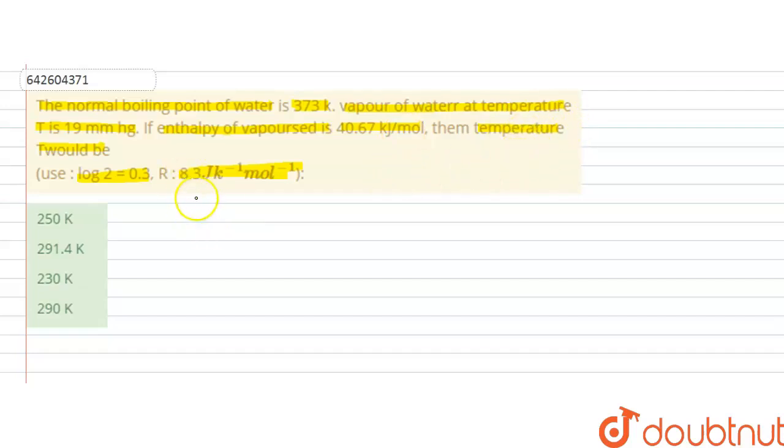So we have the value of P1, that is 19 millimeters of mercury. At boiling point, the pressure will be equal to the atmospheric pressure.